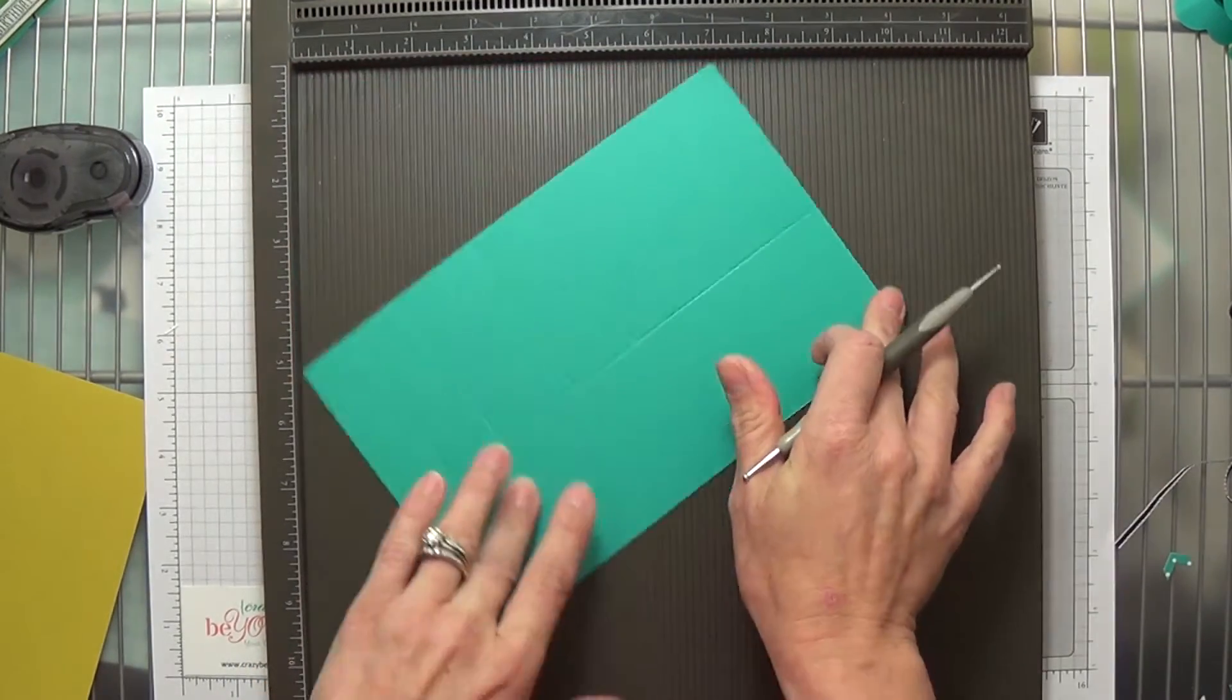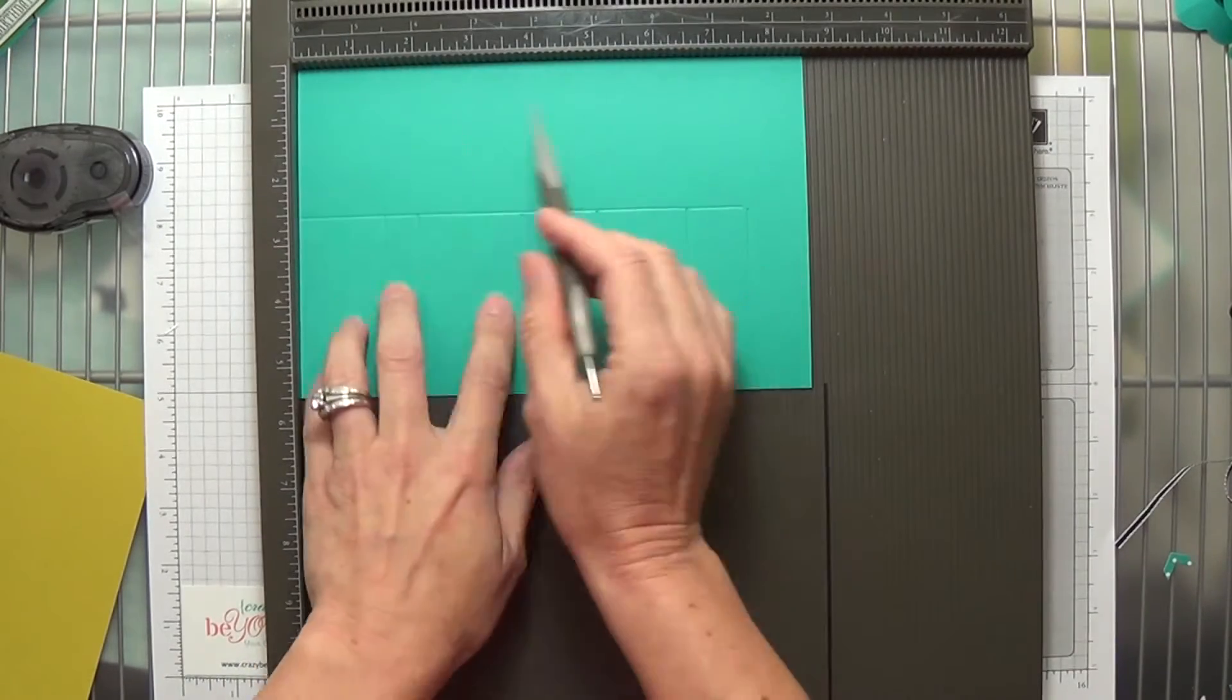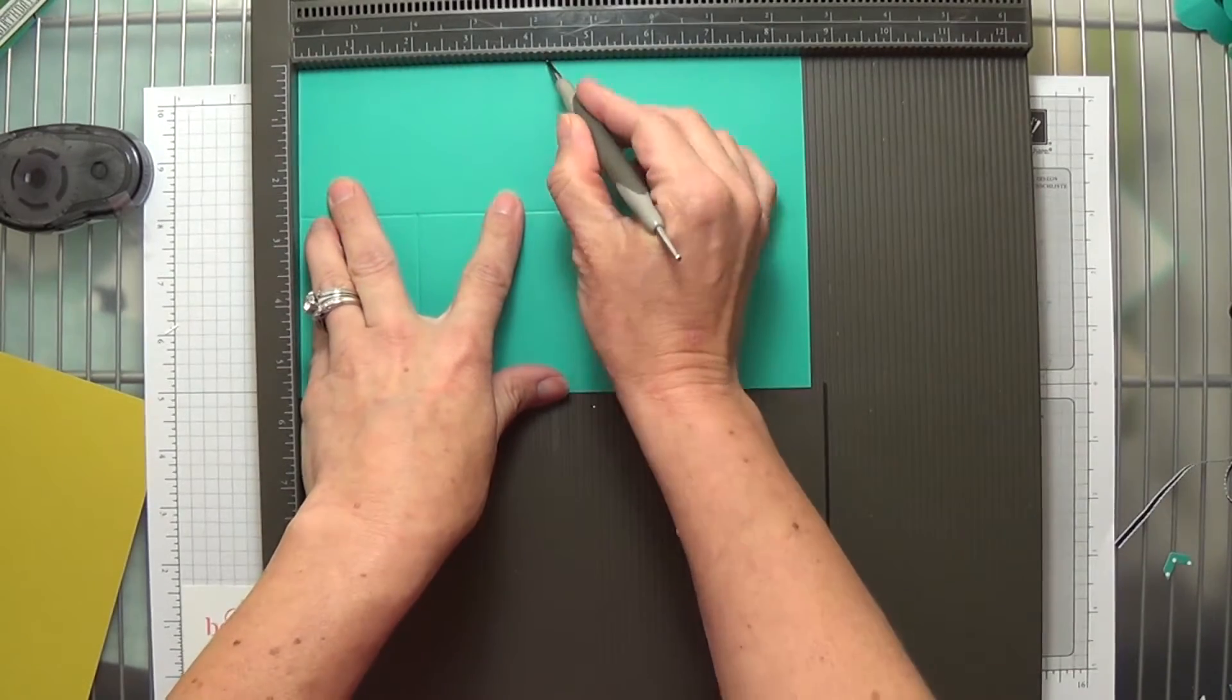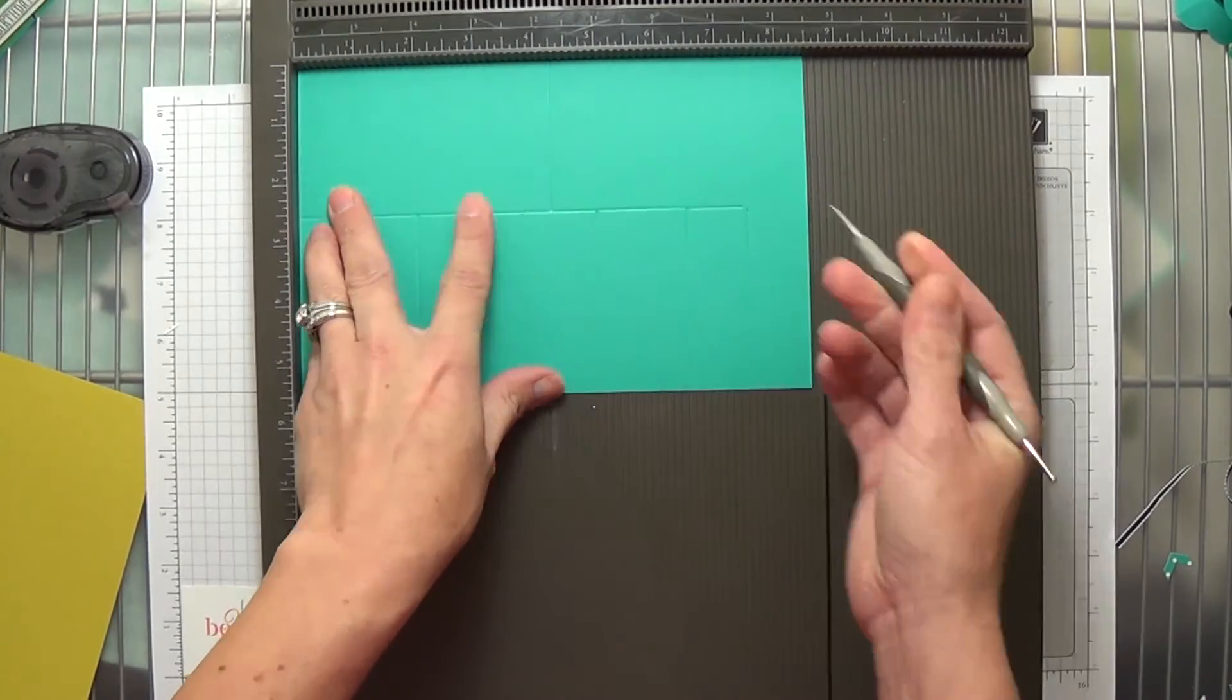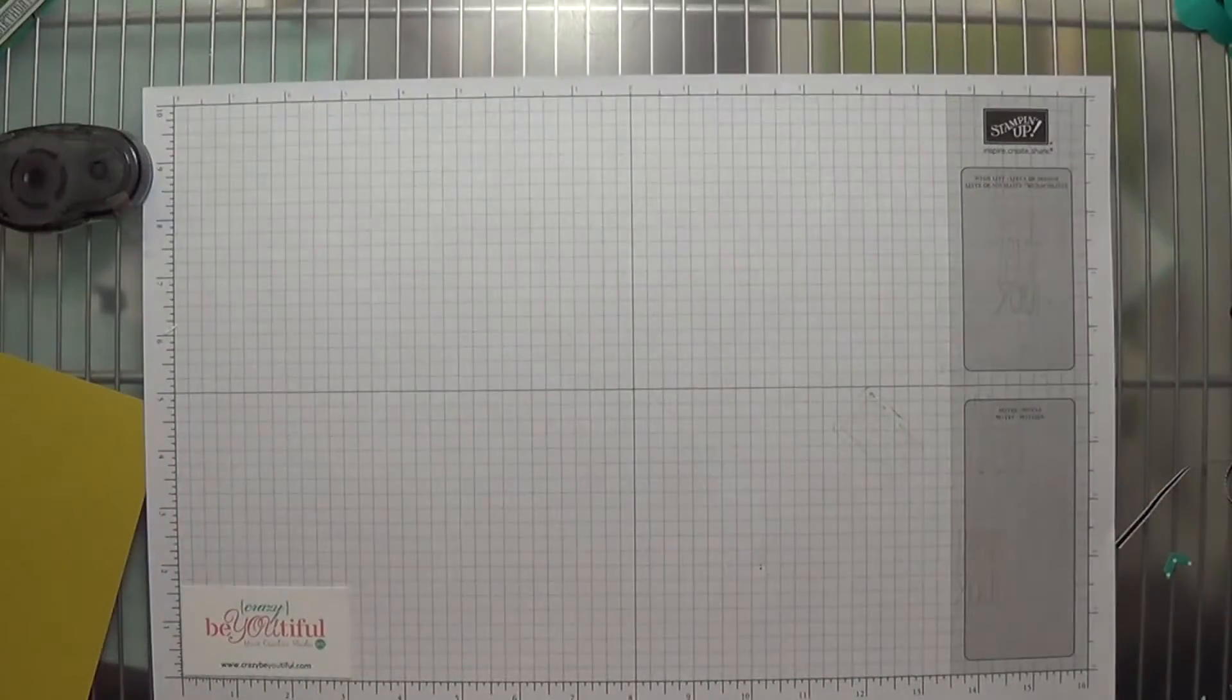Then we're going to rotate it to the side that doesn't have anything scored on it yet, and score it at 4 1⁄4. That's going to be the main fold for our card.